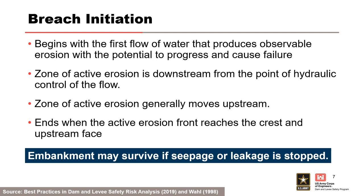As breach initiation proceeds, the zone of active erosion generally moves upstream via head cut or surface erosion during overtopping flow. The breach initiation phase ends when the active erosion front reaches the crest or upstream face of the dam, thereby producing a rapidly accelerating breach outflow and typically unstoppable failure of the dam or levee.